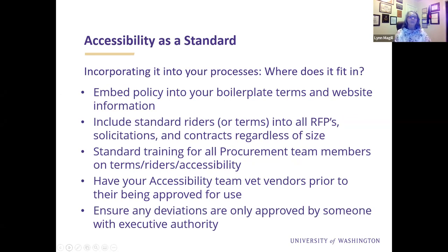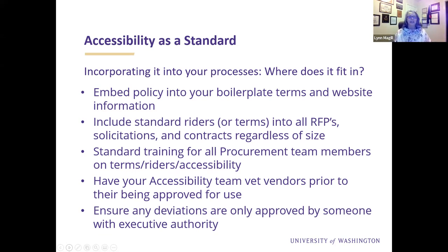Incorporating accessibility as a standard into your processes can often be the most difficult part. At the UW, we embed it into our boilerplate terms and website information, so we put it right out there as a standard. That way it doesn't get missed accidentally. We include standard terms into all of our RFPs, request for proposals, or any type of solicitation or contract, regardless of size — $500 or $500 million. We do standard training for all procurement team members on the terms and accessibility so that there aren't gaps depending on which team member handles things.